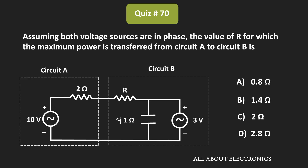Hey friends, welcome to the YouTube channel All About Electronics. In this question, we have been given a circuit and we have been asked to find the value of R such that the maximum power will get transferred from circuit A to circuit B. We are given that both voltage sources are in phase.